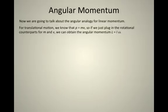...that we could find the angular equivalent just by substituting the linear analogs to their rotational counterparts. The rotational counterpart for mass is the moment of inertia, and the rotational counterpart to velocity is the angular velocity.